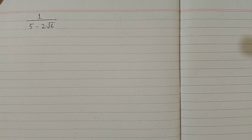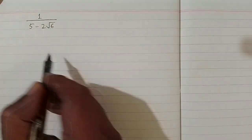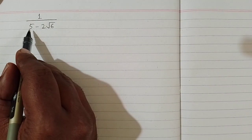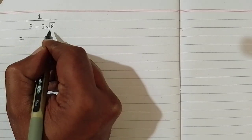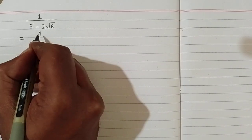In this video we will rationalize the denominator of the given fraction. So we have 1 upon 5 minus 2 square root of 6. So we have to remove this square root sign from the denominator.